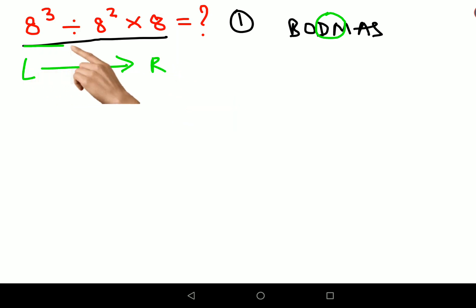First we'll do the division, so 8³ ÷ 8² × 8. This then comes out to be 8 × 8 × 8 ÷ 8 × 8.